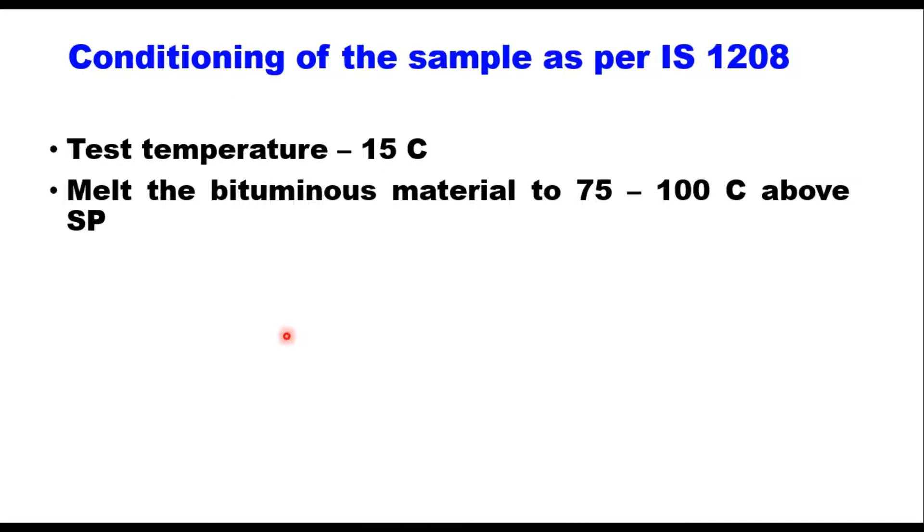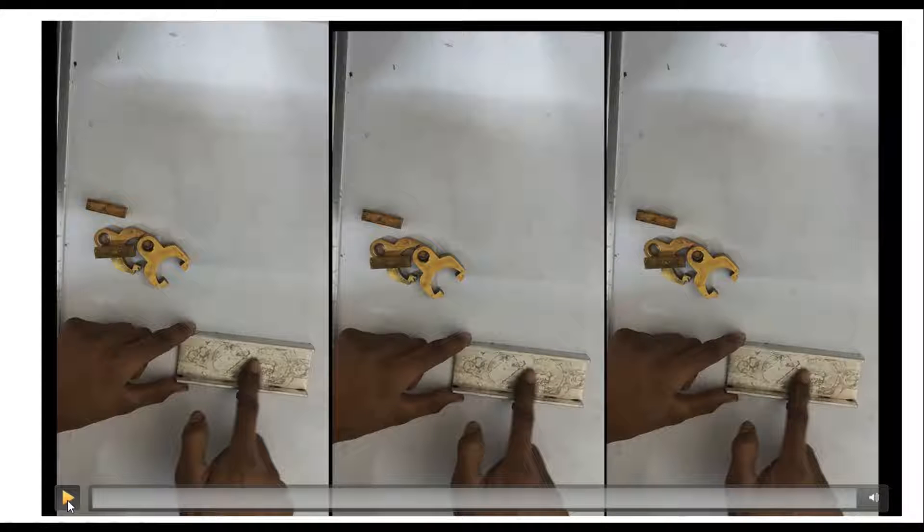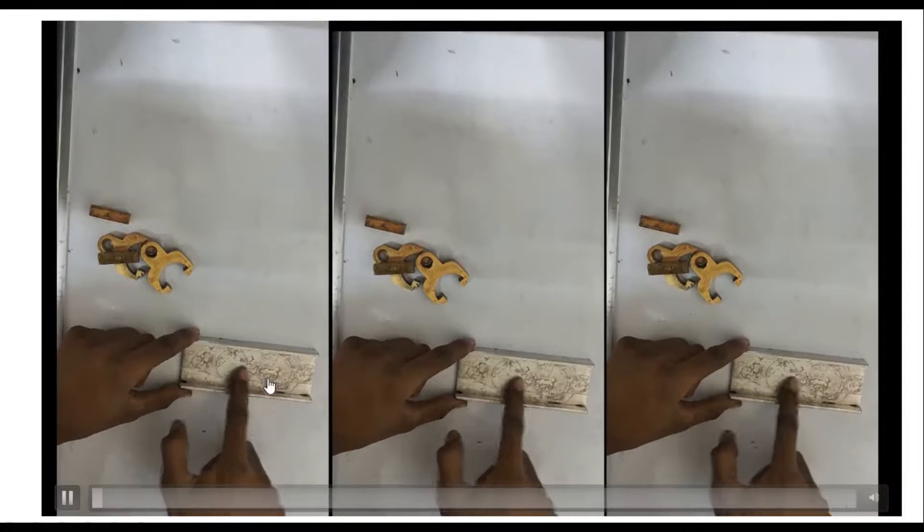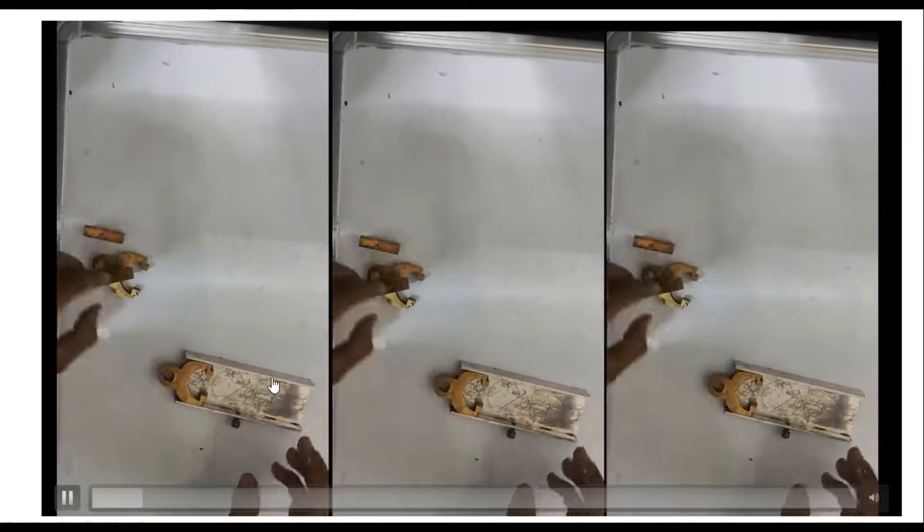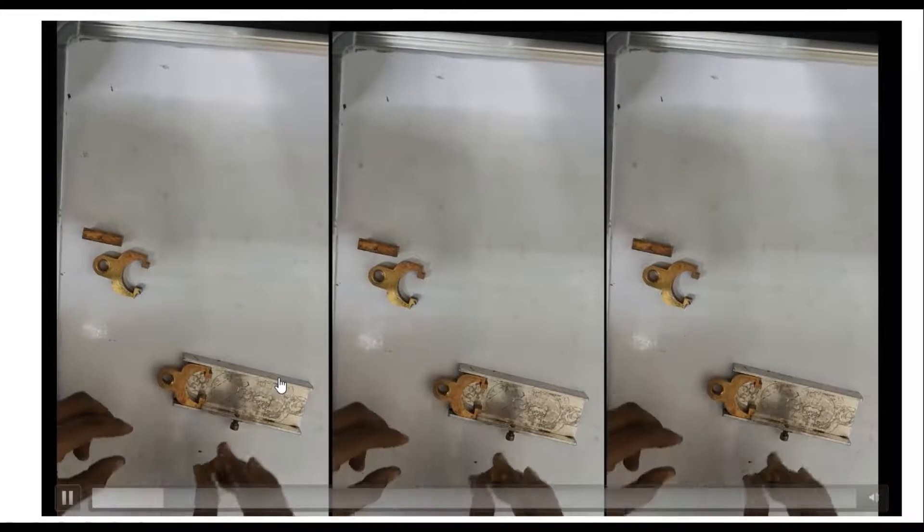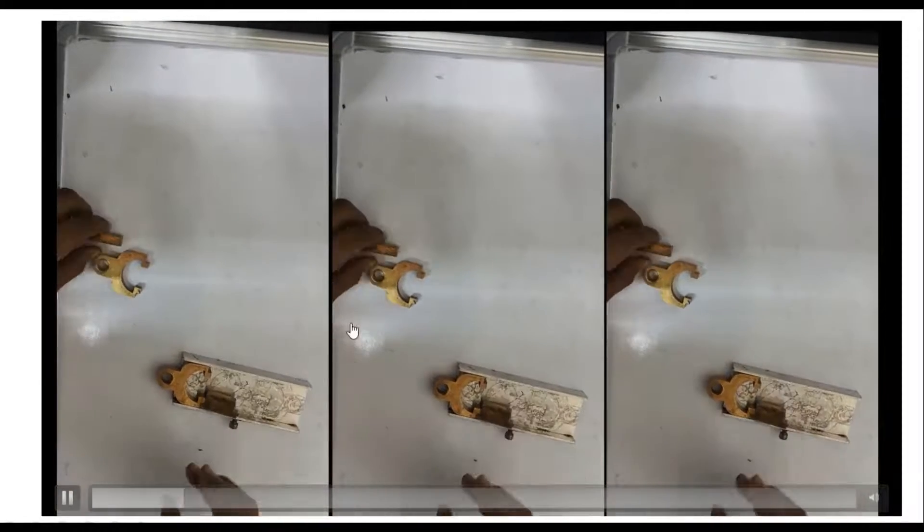The temperature for elastic recovery test is 15 degrees Celsius as specified in BIS code. First, heat the bitumen material to a temperature 75 to 100 degrees Celsius above softening point. Then coat the surface of the plate and interior surface of the mold with a mixture of glycerin and dextrin, then assemble the mold.